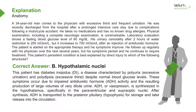ADH, or vasopressin, is synthesized in the hypothalamus, specifically in the paraventricular and supraoptic nuclei. After synthesis, ADH is transported to the posterior pituitary (hypophysis) for storage and later release into the circulation.